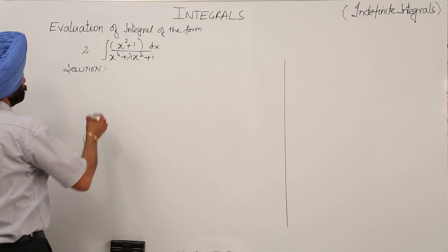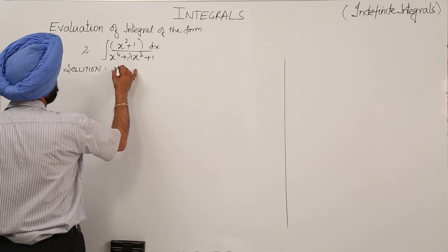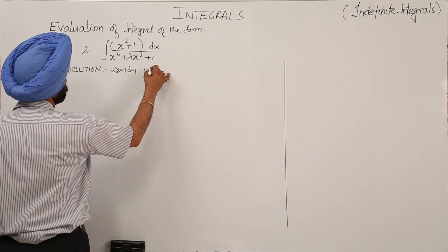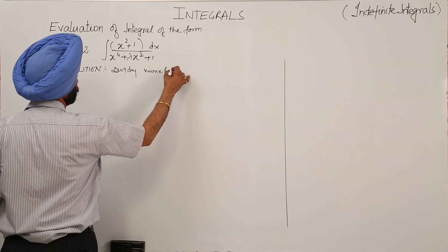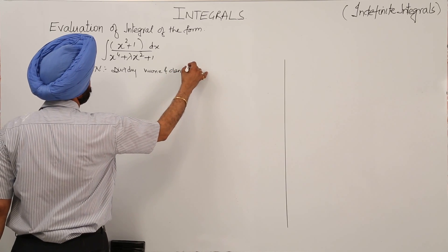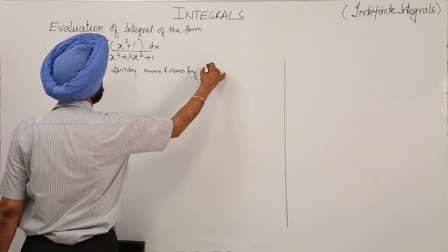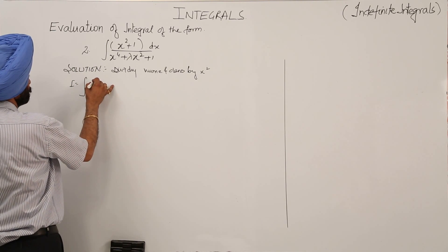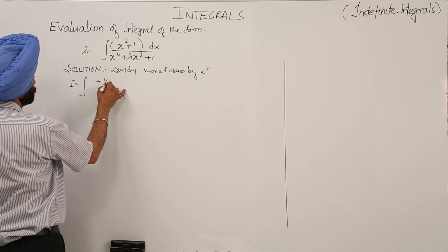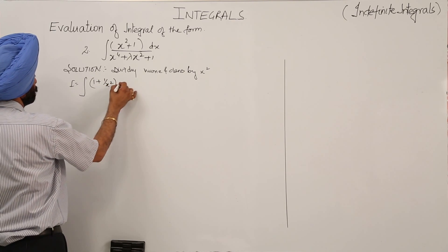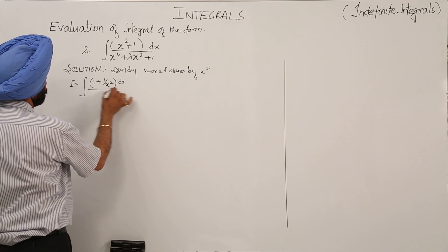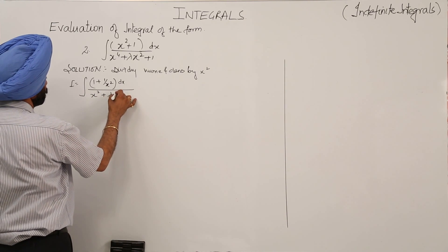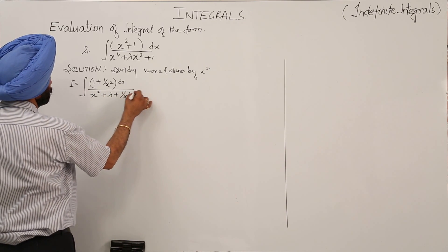Second question now. Dividing numerator and denominator by x square, the question turns to: the integral of (1 + 1/x²) dx upon (x² + λ + 1/x²).